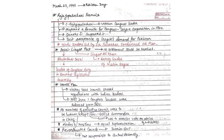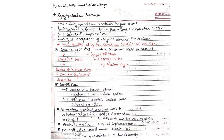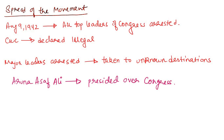Gandhiji had carefully built momentum through individual civil disobedience movements, organizational revamping, and a consistent propaganda campaign. However, the government was in no mood to negotiate or wait. In the early hours of August 9, 1942, in a single sweep, all top leaders of the Congress were arrested and taken to unknown destinations. The Congress Working Committee was declared unlawful, the Criminal Law Amendment Act of 1908 was enforced, and public meetings were prohibited. Because major leaders were arrested, young Aruna Asaf Ali presided over the Congress committee session on August 9 and hoisted the flag.